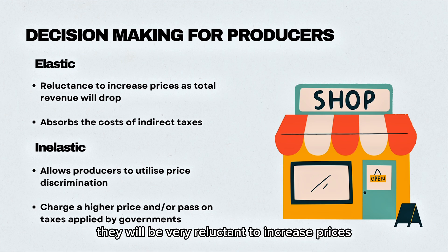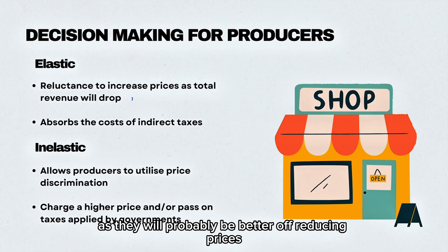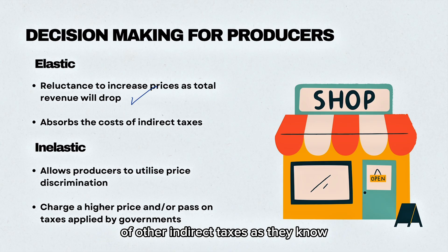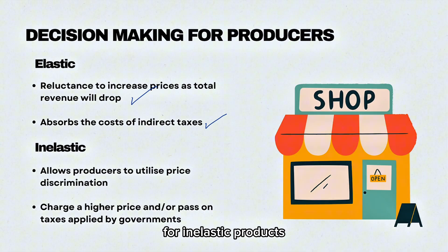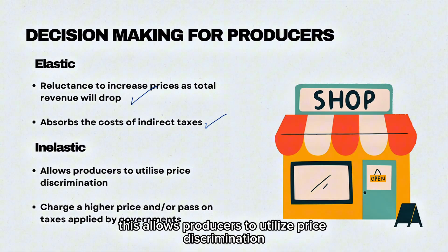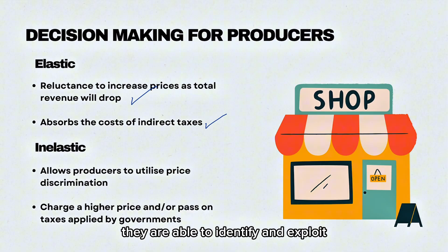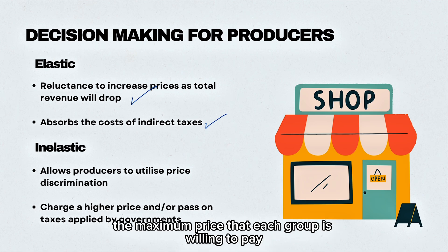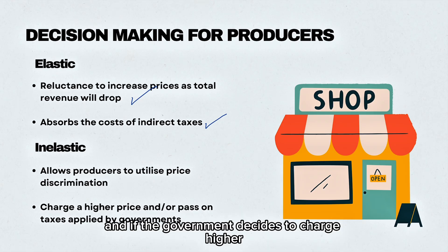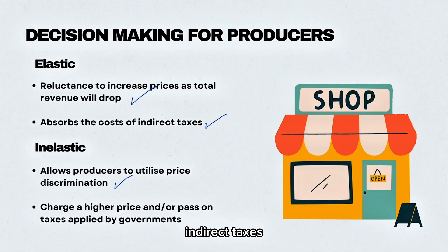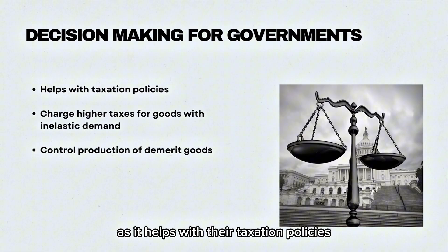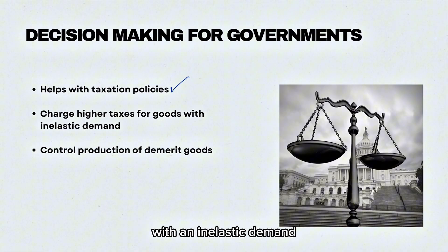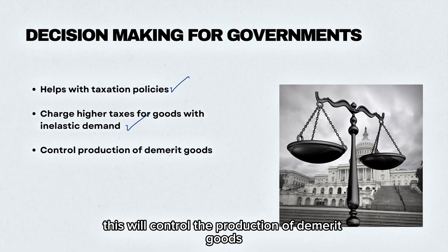In the case for producers: when the product is elastic, they will be very reluctant to increase prices, as they will probably be better off reducing prices instead. They will also happily absorb the cost of indirect taxes. For inelastic products, this allows producers to utilise price discrimination — as firms know their product is price inelastic, they are able to identify and exploit different economic groups to extract the maximum price each group is willing to pay, and can pass on higher indirect taxes to consumers easily. For governments, higher taxes on goods with inelastic demand will control the production of demerit goods.